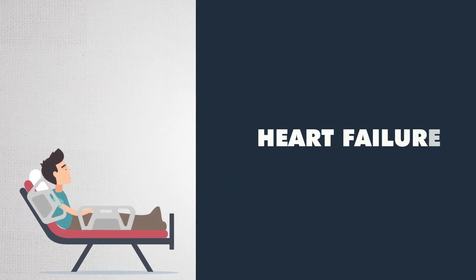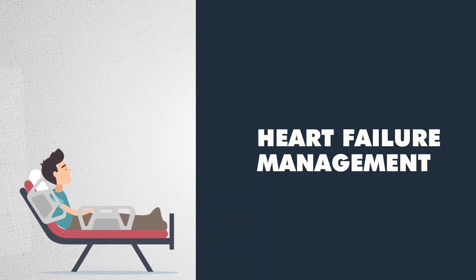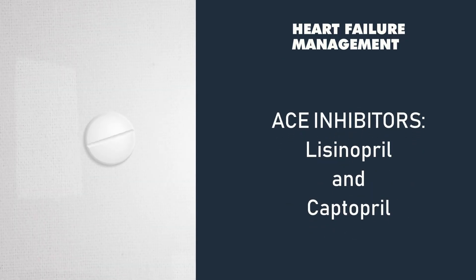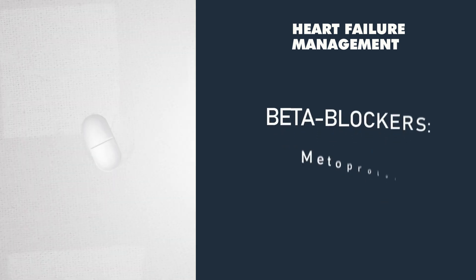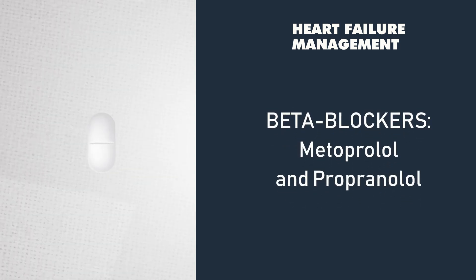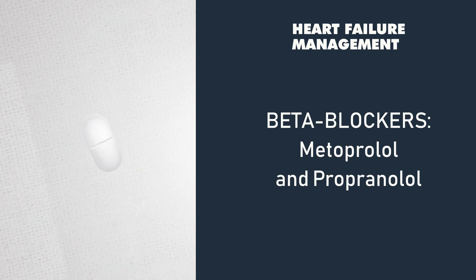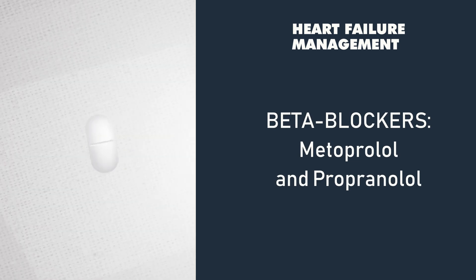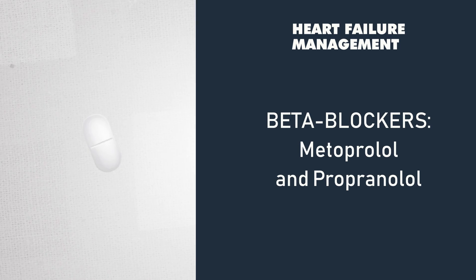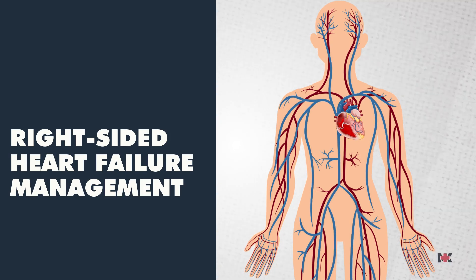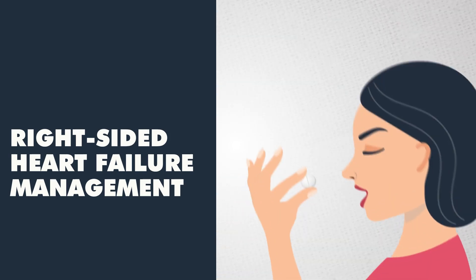For heart failure management, we usually treat with blood pressure medications such as ACE inhibitors and beta blockers. ACE inhibitors are our -prils, like lisinopril and captopril. Beta blockers are our -olols, like metoprolol and propranolol. These reduce blood pressure and heart rate and help systolic function. For right-sided heart failure with swelling everywhere, we need to get rid of fluid using diuretics to reduce water retention.